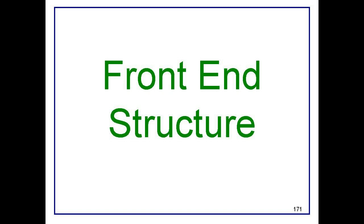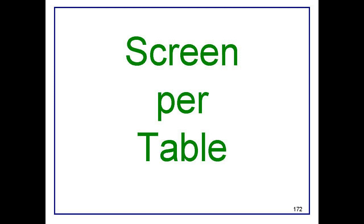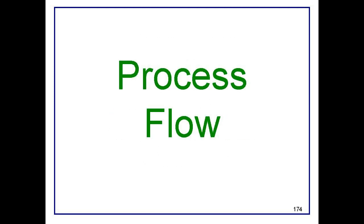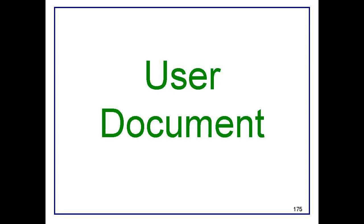With the back end in place, you can begin to design the front end. Usually there is one screen per master table. The interface structure should follow the flow of the business process as closely as possible. You iterate the screen designs with the users.